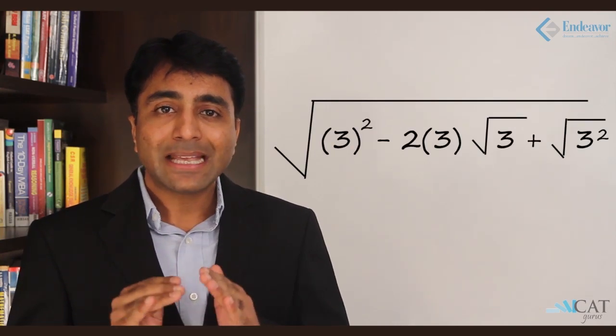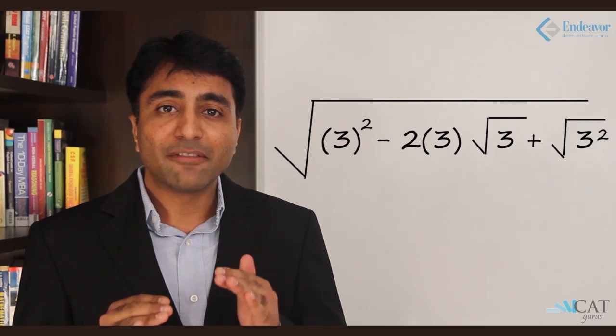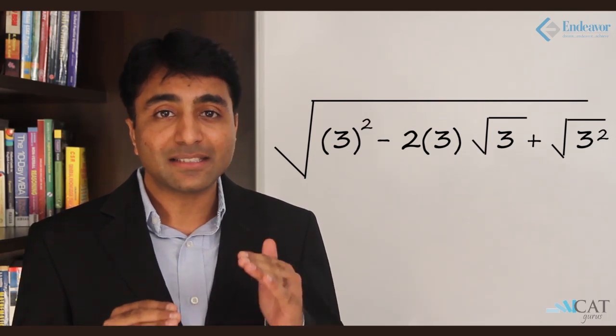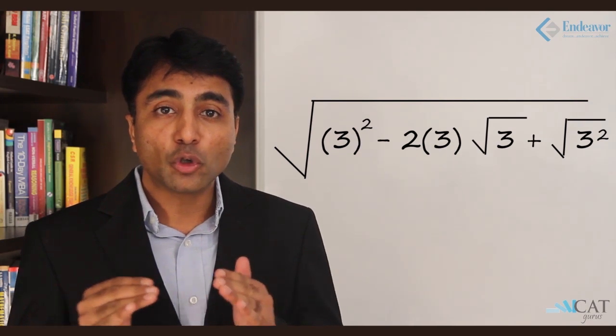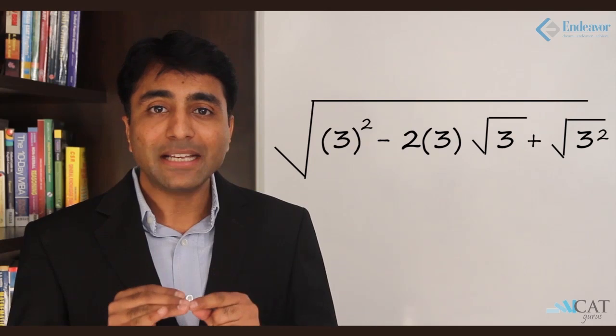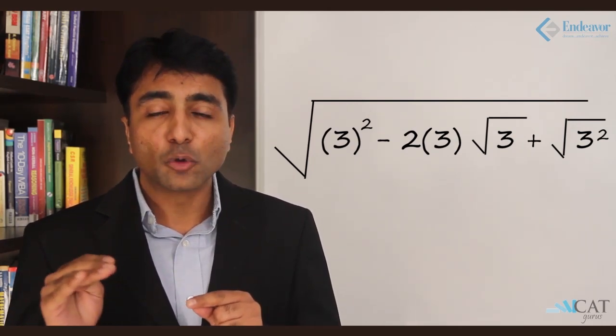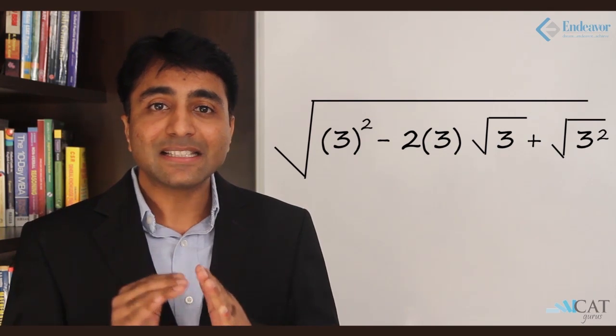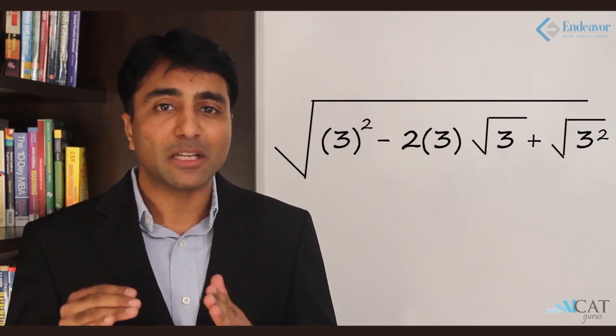Now, 12 can be distributed as 9 plus 3, wherein 9 can also be written as 3 square and 3 can be written as root 3 the whole square. So here when I classify, I will get 3 square minus 2 into root 3 into 3 minus root 3 the whole square. This is nothing but representation in the form of a square minus 2ab plus b square.